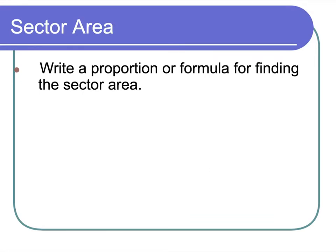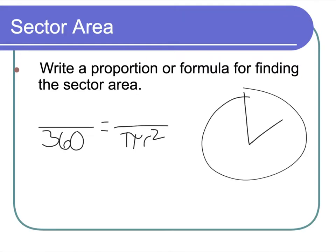Sector area. It's going to look very similar to when we did our arc length. So there's 360 degrees in a circle, right? And the area of the whole circle would be πr², right? So that's like the whole thing in our denominators. Now, if I'm looking at finding the area of, say, this sector right here, if I knew the central angle, then I'd be able to find my sector area.